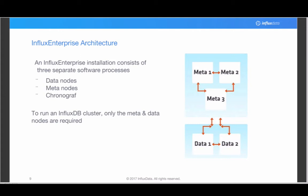An Influx Enterprise installation consists of three separate software processes. To have an enterprise installation, you get data nodes — nodes that store the actual time series data — meta nodes that keep some state consistent across the cluster, and Chronograf as the UI layer. To run an InfluxDB cluster, all you really need are the meta and data nodes; that gives you the scaling and clustering without the full feature suite.